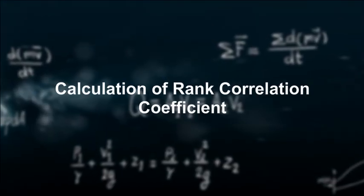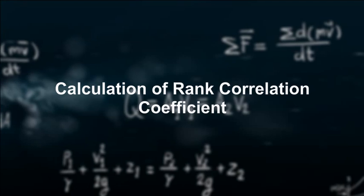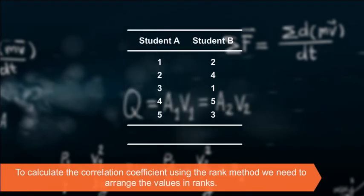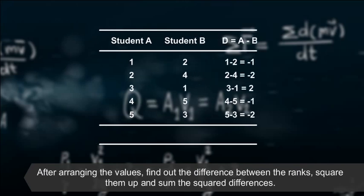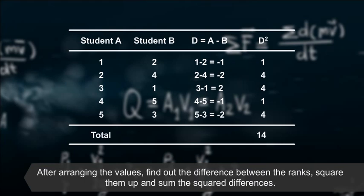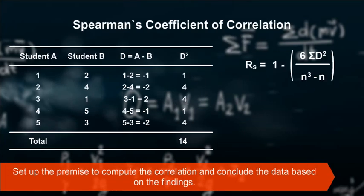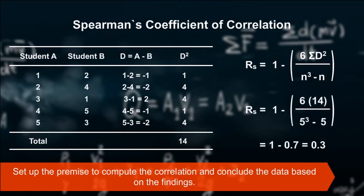To calculate the correlation coefficient using the rank method, arrange the values in ranks. After arranging the values, find the difference between the ranks, square them, and sum the squared differences. Then set up the formula to compute the correlation and conclude based on the findings.